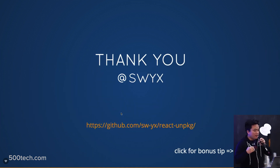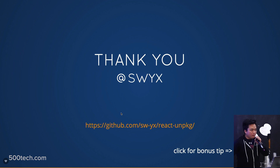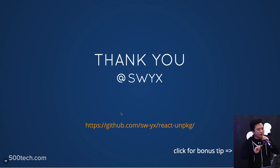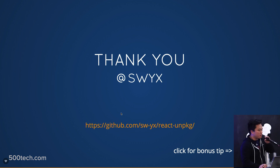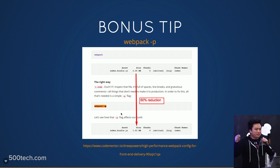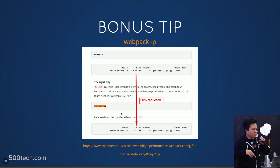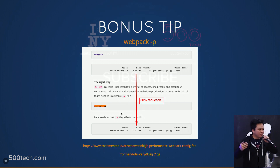I'm at @swyx on Twitter, and all my talks have a GitHub page — go check it out. One bonus tip: two characters. For those who don't read webpack docs — it's 'webpack -p.' What does -p do? It applies Uglify and clean HTML, which in a production app reduces your bundle size by 60% by squishing all your JavaScript together. webpack -p. Thank you.